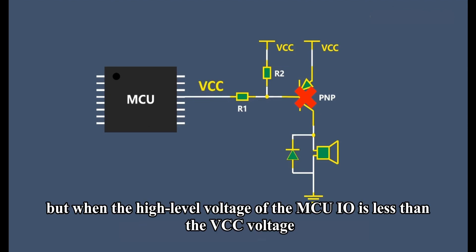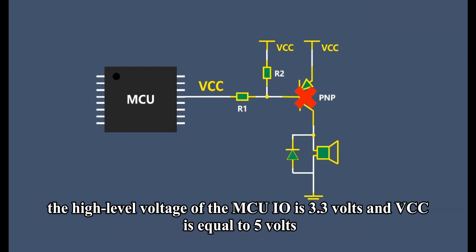But when the high level voltage of the MCU IO is less than the VCC voltage, for example, the high level voltage of the MCU IO is 3.3 volts and VCC is equal to 5 volts.